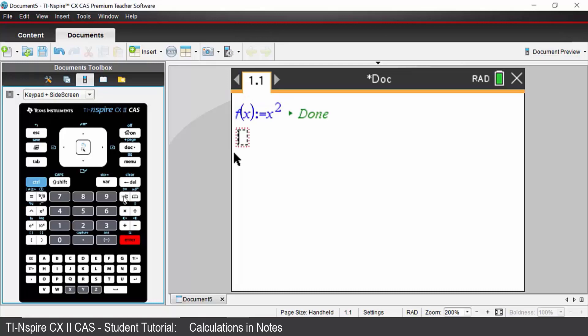Press enter and that function is now stored. We now need to enter our x value and I'm going to call that xval and that's going to be defined to be equal to 1. Press enter and that stores my x value.